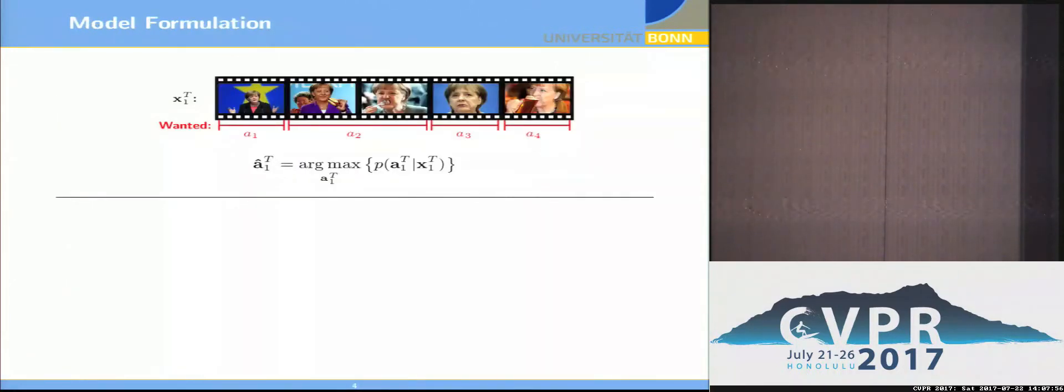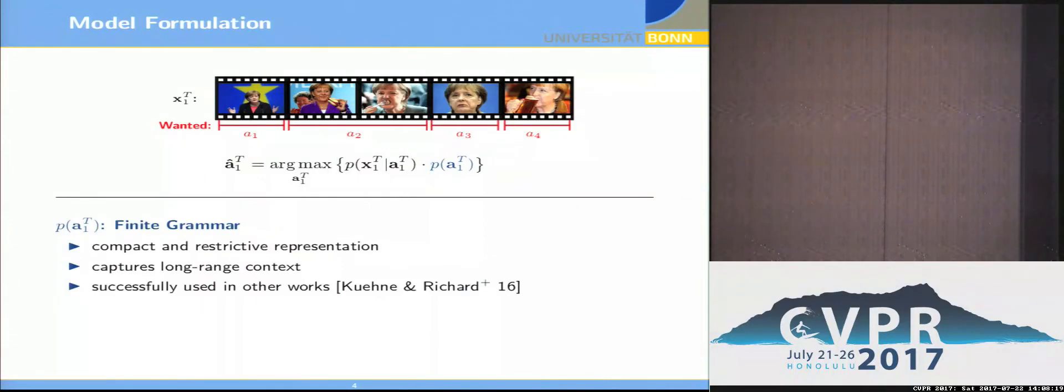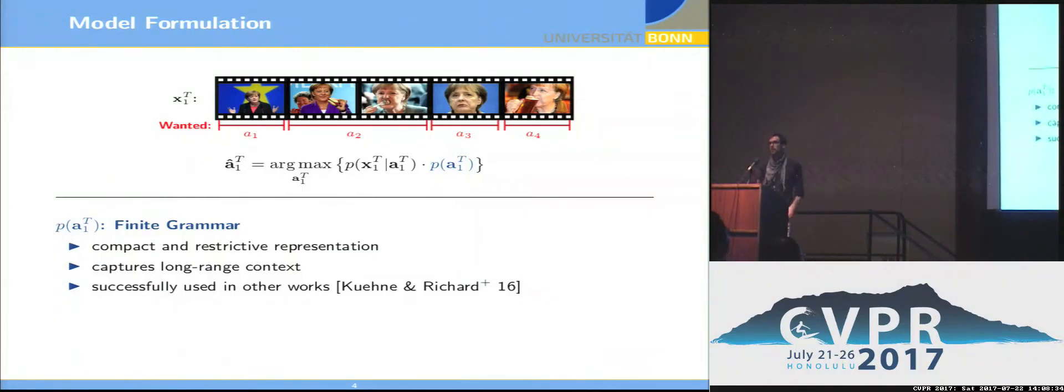Let's put it in a more probabilistic setting. So assume we have this video, which you've already seen before, and we want to infer all the actions that happen within the video. So what we actually want to have is a probability of all the frame-wise actions given the video, and we want to maximize this probability of all possible action labelings. First thing we do is we factorize this probability, so we get a prior on the actions that we actually want to hypothesize on the frames. One could model this prior using n-grams, for example, but it's quite important in our case to have long-range dependencies here.